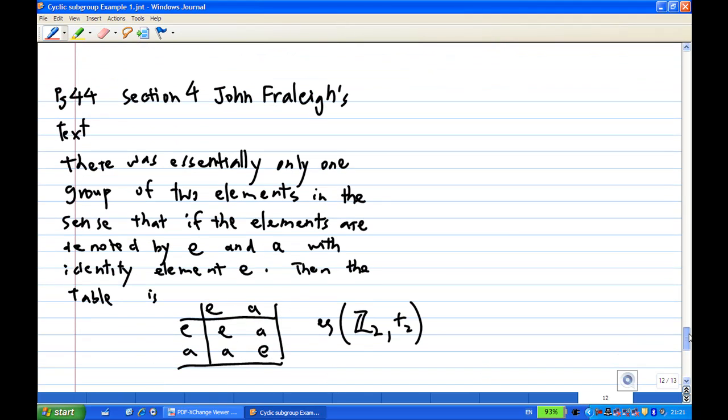Now what is this group isomorphic to? According to page 44, section 4 of John's text, there was essentially only one group of two elements, in the sense that if the elements are denoted by e and a with identity element e, then the table will look like the one shown, and this is the same as Z2 under addition modulo 2. That's the end of the recording.